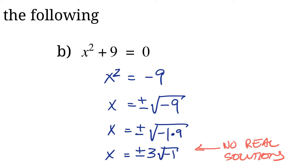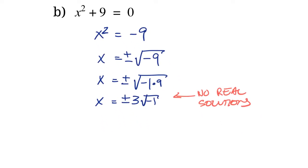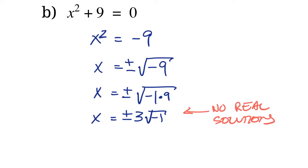But just because there's no real solutions doesn't mean there's no solutions. A little trick that some very smart mathematicians came up with is they decided to just give the square root of negative 1 a name. They said, let's call that i. Why i? Because these things were sort of a little bit out there, a little bit strange — they called it i for imaginary.